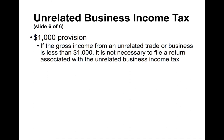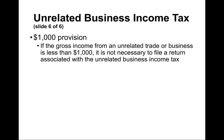There's a special rule: if the gross income from an activity is less than $1,000, you don't have to file Form 990-T for that activity. Also, an activity is not treated as unrelated trade or business if there is no arrangement or expectation of substantial benefits for payment other than use of the organization's name, logo, or product lines, and the payment is not contingent on attendance, ratings, or similar factors.